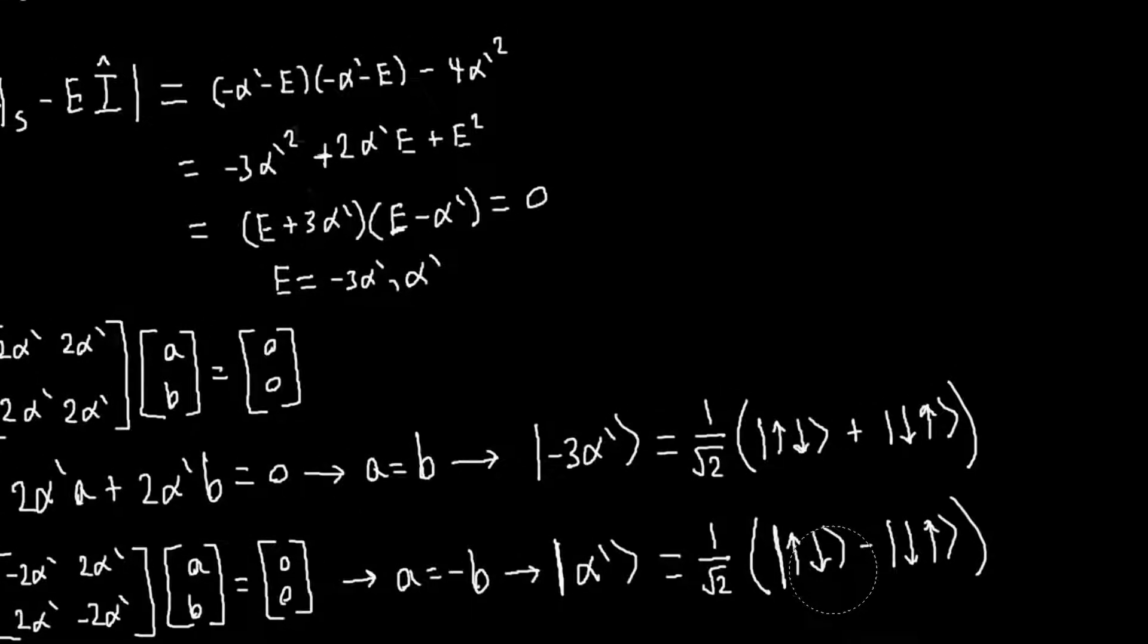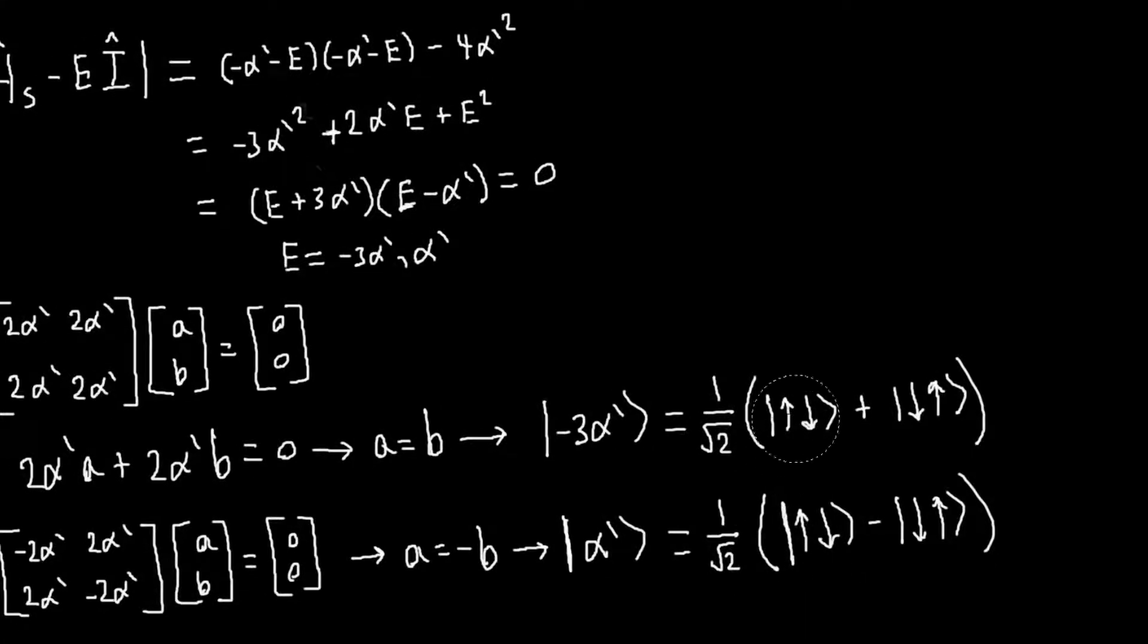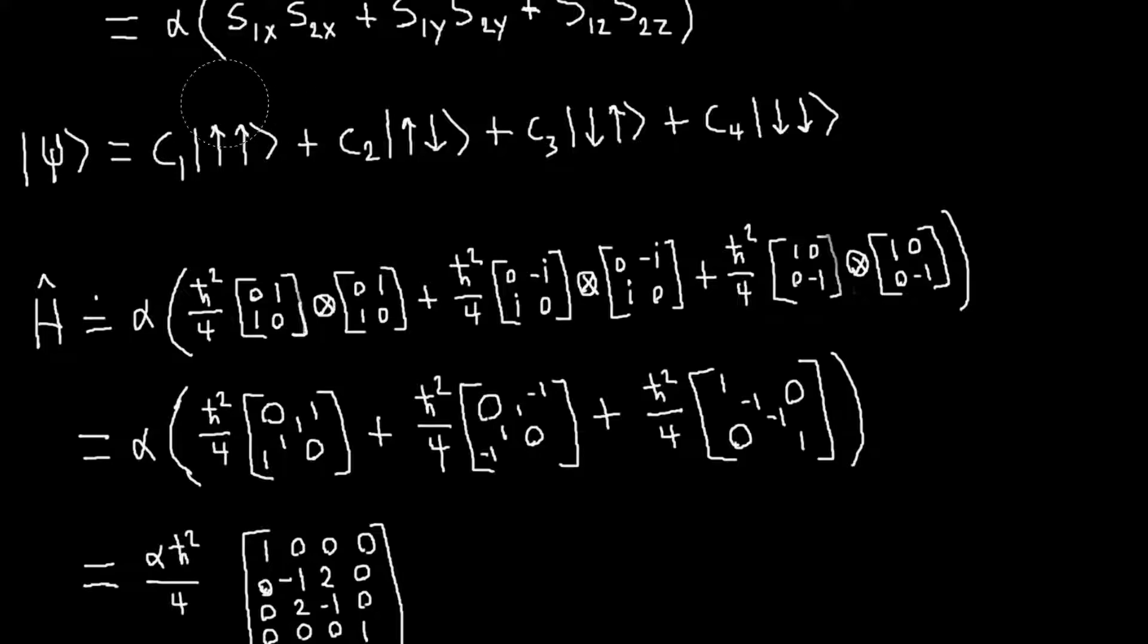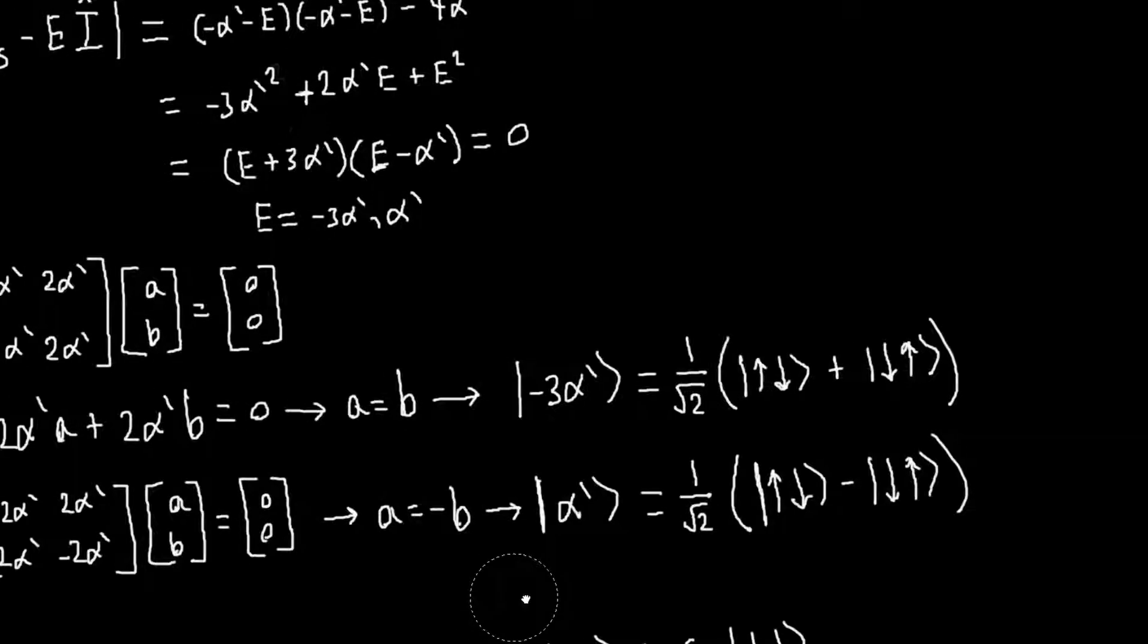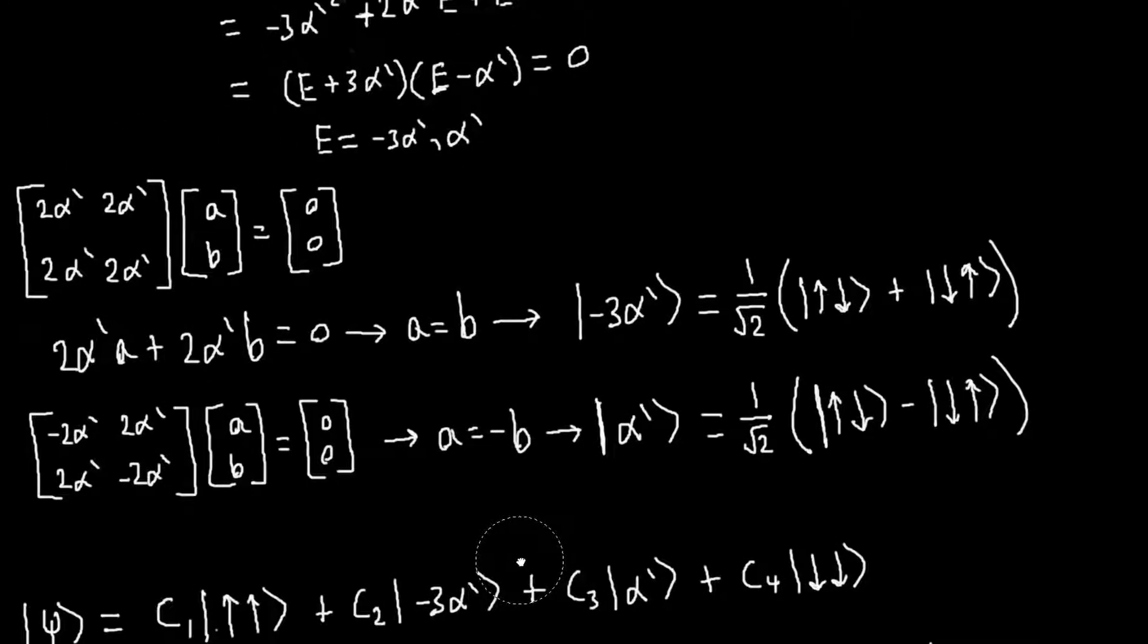So once we've done that, we have all of our eigenvectors. Our eigenvectors will be this, this, this, this, and this. And now that we've done that, our problem is basically solved.